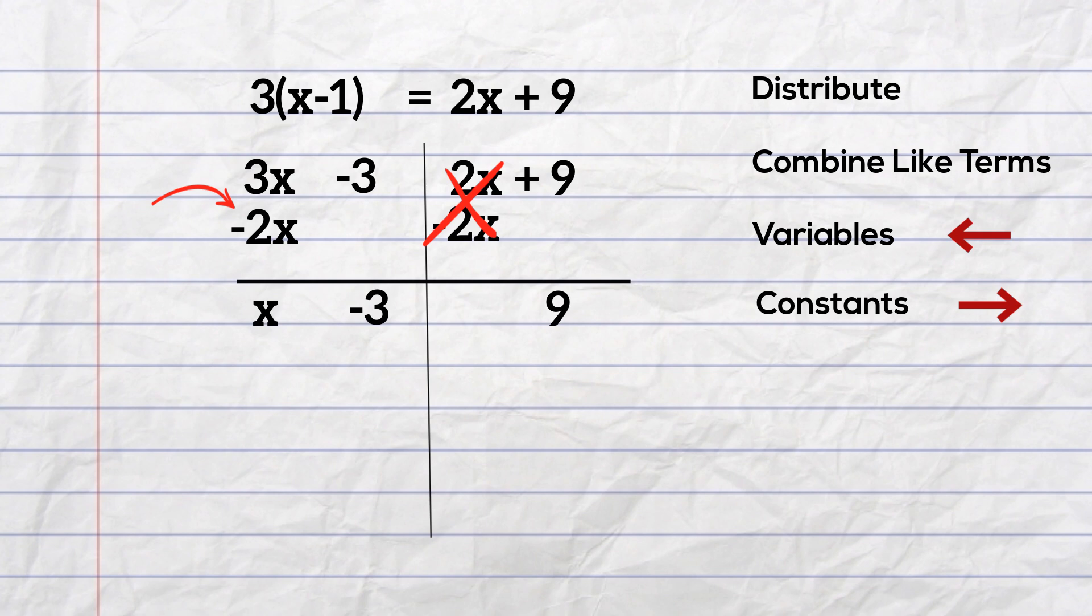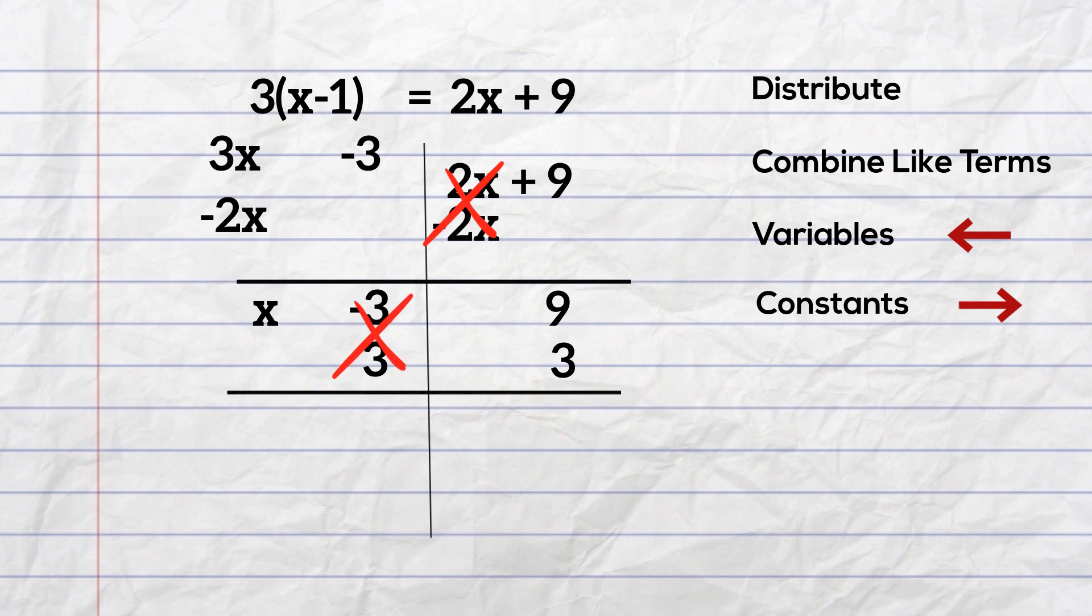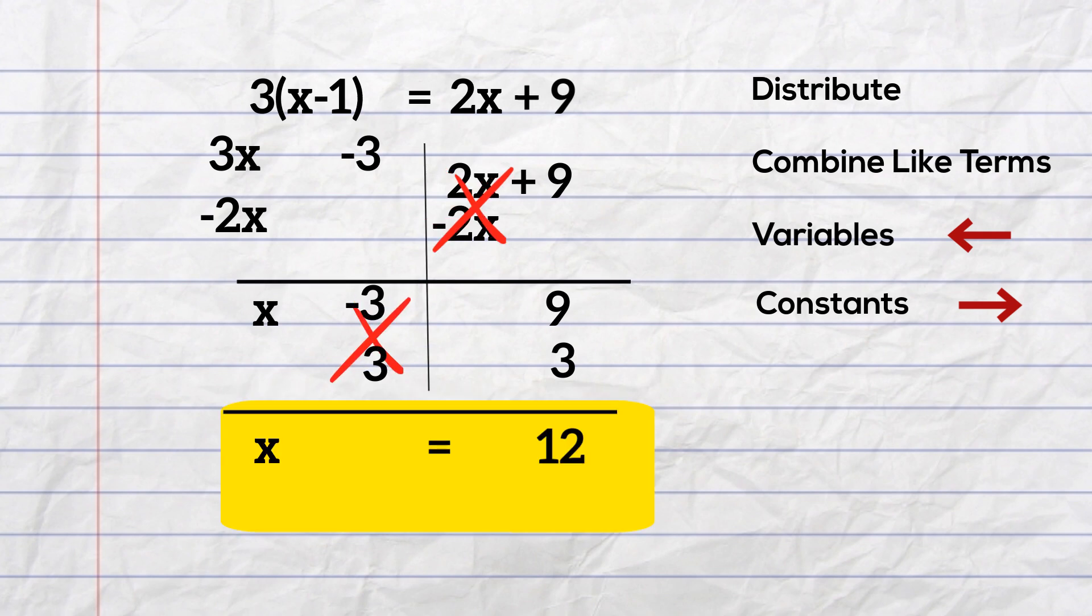Now I need to move numbers to the right. In order to get rid of the negative 3 on the left, I will add 3. And what I do on the left, I need to complete on the right. So I will add 3 to the 9. The 3s cancel and that gives me x equals 12.